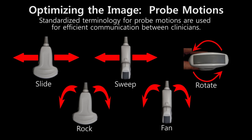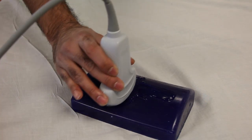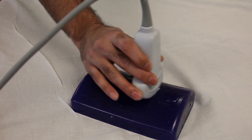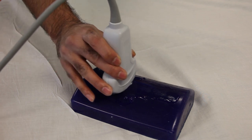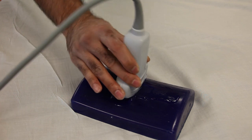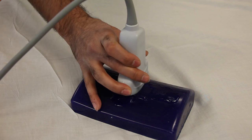There are two categories of probe movements: macromovements and micromovements. Macromovements are done to locate the organ or tissue of interest, and micromovements are done to center the organ or tissue of interest on the screen. We use standardized terms to define various probe movements: slides are done along the plane of the image, sweeps are done perpendicular to the plane of the image, and other movements consist of rocking, fanning, and rotating.